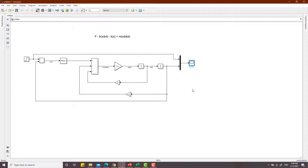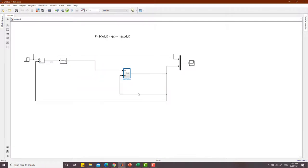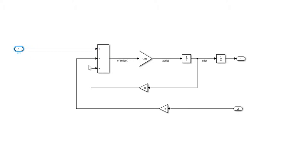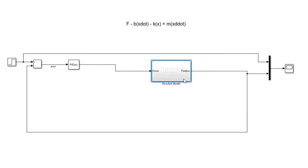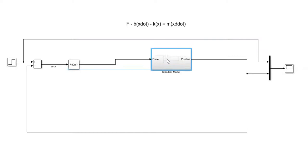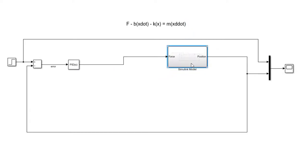This is how a spring-mass-damper system behaves physically with the given mass, spring, and damper values. That was the first way to model it. Now let's move to the second way. I'll lock the first model into a subsystem to keep things clean.